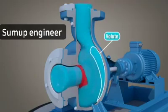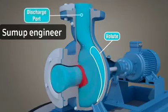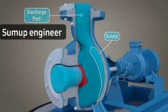As the liquid travels along the volute, its velocity decreases while its pressure increases. The now higher pressure liquid flows to the discharge port of the pump and out into the piping system.